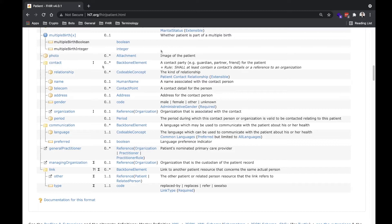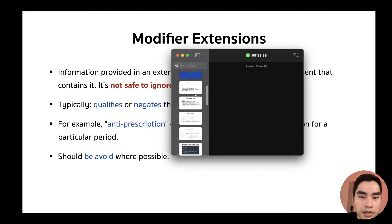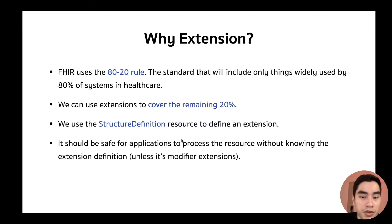Not many data types can have modifier extensions — backbone element is one of them. Because modifier extension can modify the meaning of an element, it is not safe to ignore. Normally, a regular extension can be safely ignored if the application doesn't know its meaning. But if it's a modifier extension, it's not safe to ignore because it can significantly change the meaning of the element containing it.